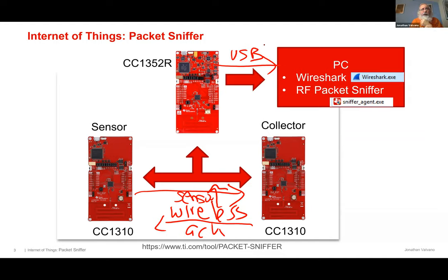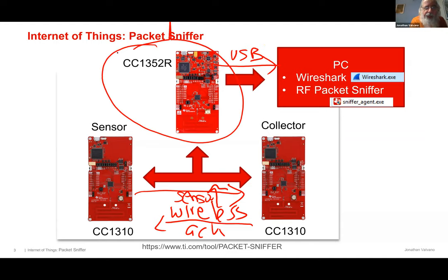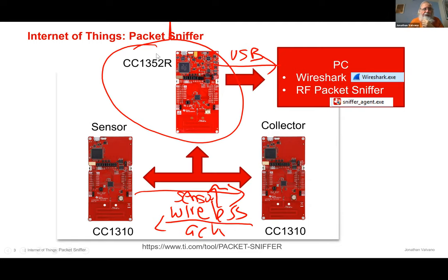Once you're past Lab 1, I'll go to checkout and you can check out the sniffer kits — there are about six in checkout, two inside each box. What I'm going to do is run a sniffer agent, which is a TI tool, and then open up Wireshark to see that communication. That's all my slides.